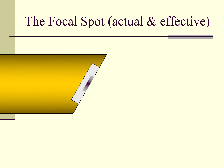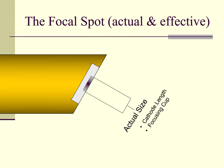Here is a closer view of just the anode and the target with the focal spot highlighted in gray. If we measure the focal spot perpendicular to the anode face, we get an idea of its actual size. The actual size is controlled by a combination of the length of the cathode wire and the degree of electron stream focusing caused by the focusing cup. Electrons can be focused by a concave charged surface, just like light in a mirror.